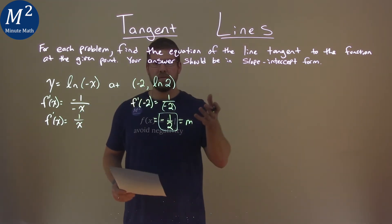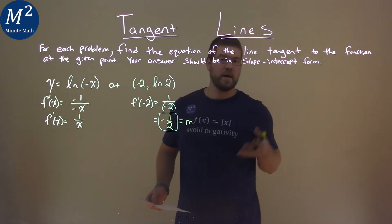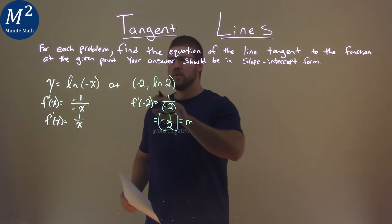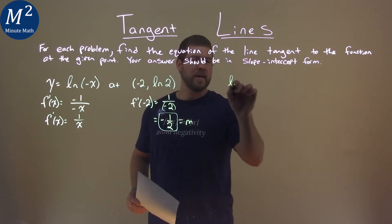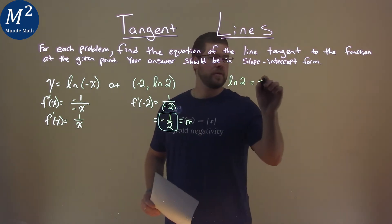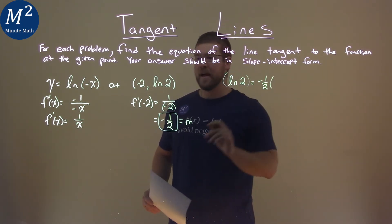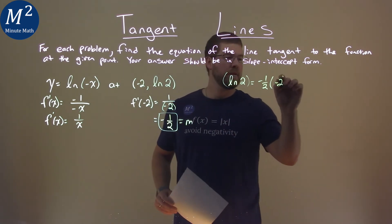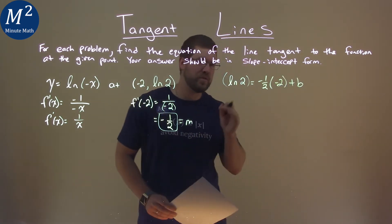Well, our equation says we have to find the b value for y equals mx plus b, and so we use our coordinate point. Our y value is the natural log of 2, don't be afraid of it, is equal to our slope, negative 1 half here, times the x value, which is a negative 2, plus b. Same rules still apply.